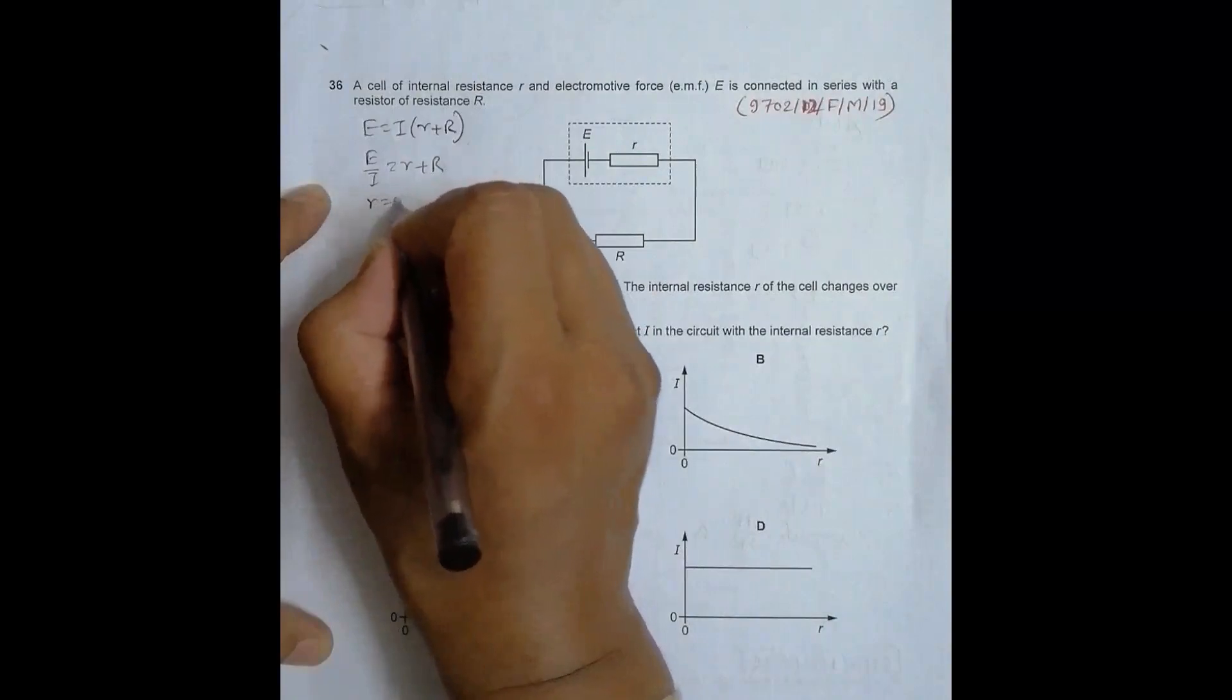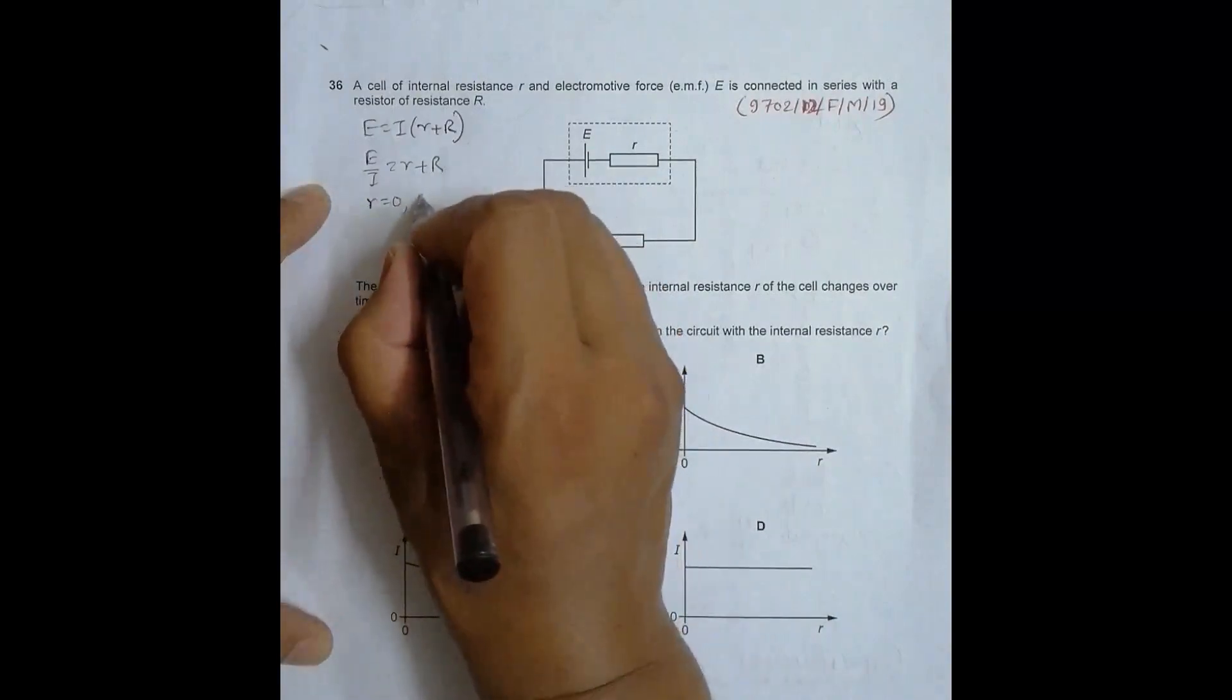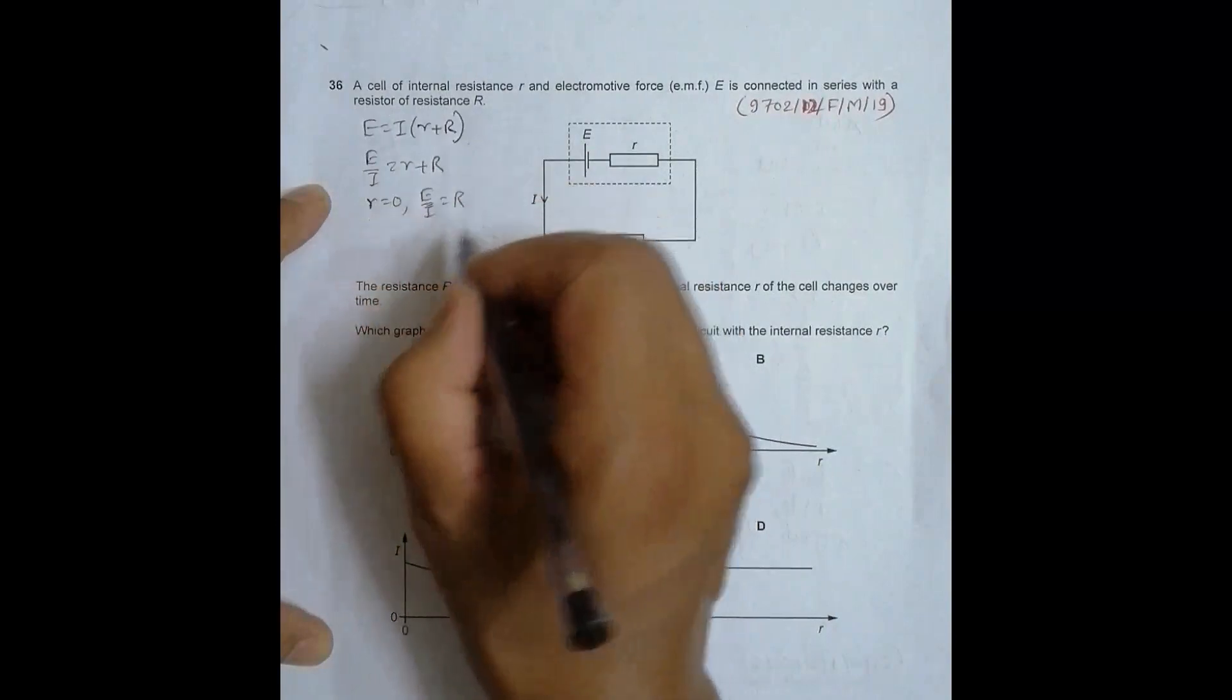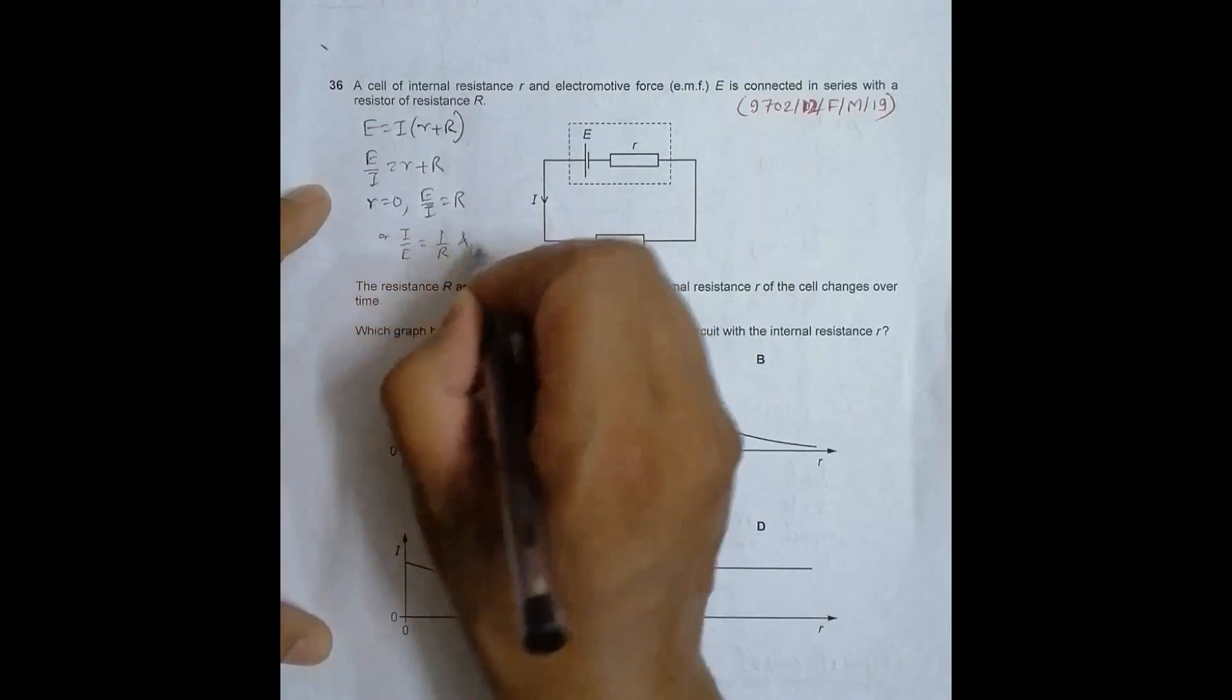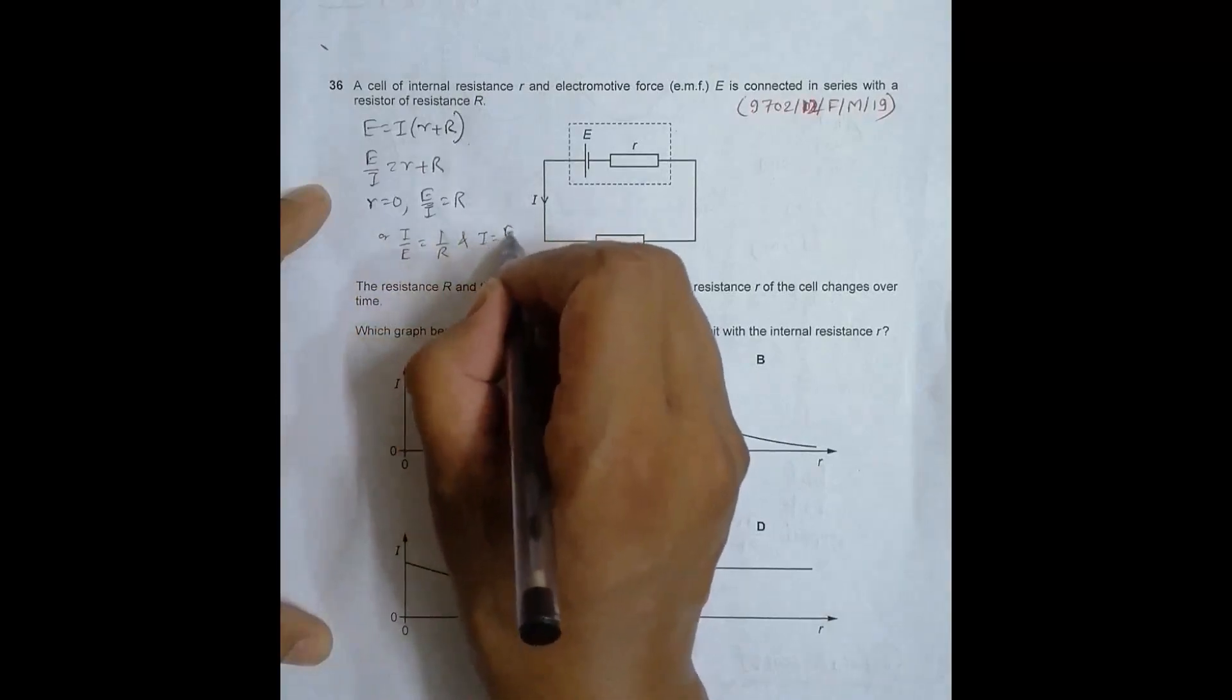When r equals 0, E/I equals R, which means I/E is equal to 1/R, and I is equal to E/R, which is a certain definite value.